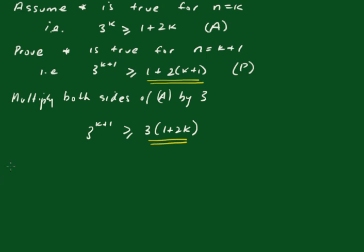So I'll say that for P to be true, 3 times 1 plus 2k has got to be greater than or equal to 1 plus 2 times k plus 1.